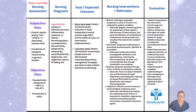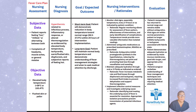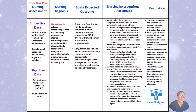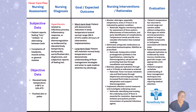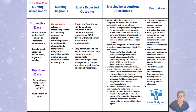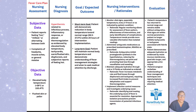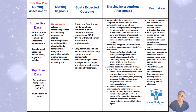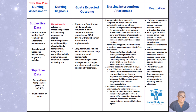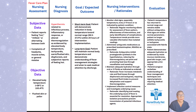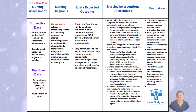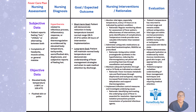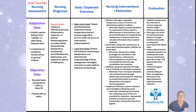Fever is also known as pyrexia or hyperthermia. It's a temporary increase in body temperature, often due to an infection or illness. It's the body's natural defense mechanism to fight off pathogens like bacteria and viruses. A fever is generally considered present when the temperature rises above 98.6°F (37°C) and reaches 100.4°F or 38°C or higher. Fever is a common symptom of many medical conditions and is a sign that the immune system is actively responding to an invader.